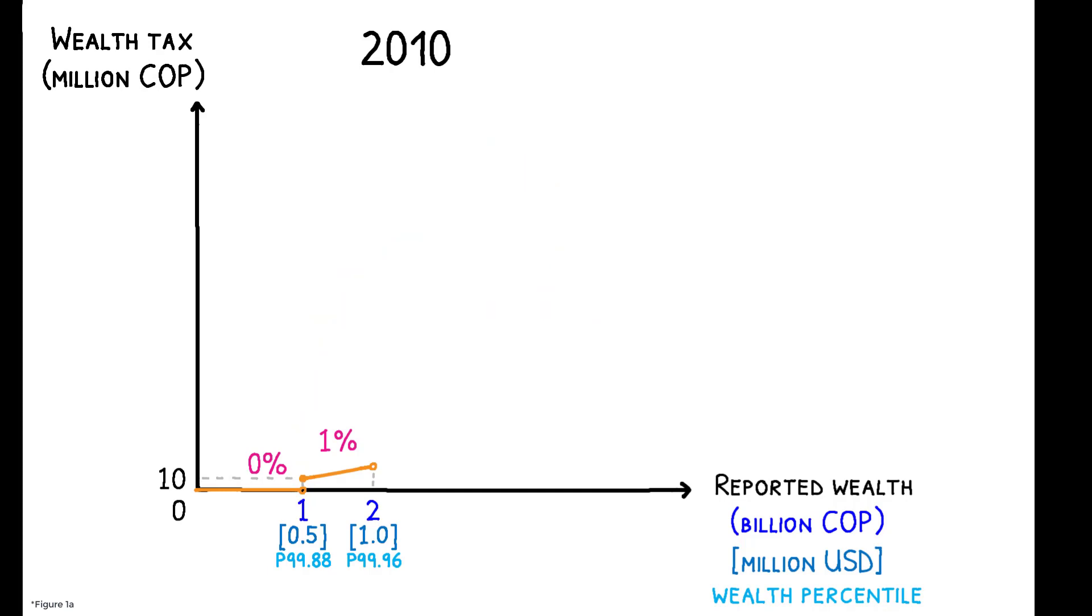Similar discontinuous jumps occurred at 2 billion, 3 billion, and 5 billion pesos. In other years, the wealth tax followed a similar piecewise linear structure, but numerous reforms over the past two decades have modified the precise location of bracket cutoffs and the tax rates between them.